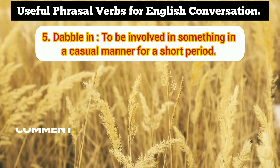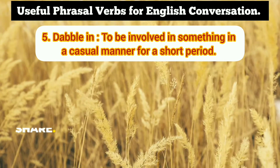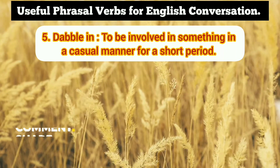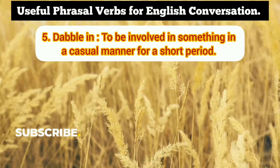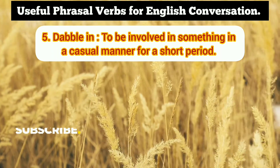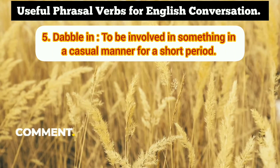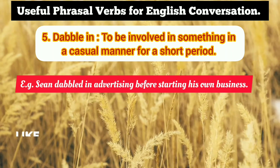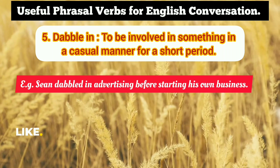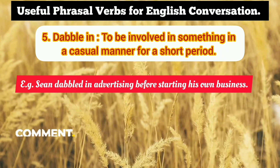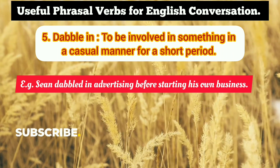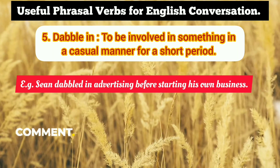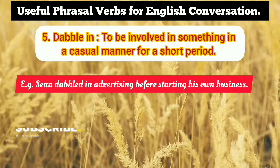The fifth phrasal verb is 'dabble in.' Dabble in means to be involved in something in a casual manner — not very seriously, just for a short time, not permanently. Example: Sean dabbled in advertising before starting his own business, meaning he was involved in the advertising industry for a short period before starting his own company.